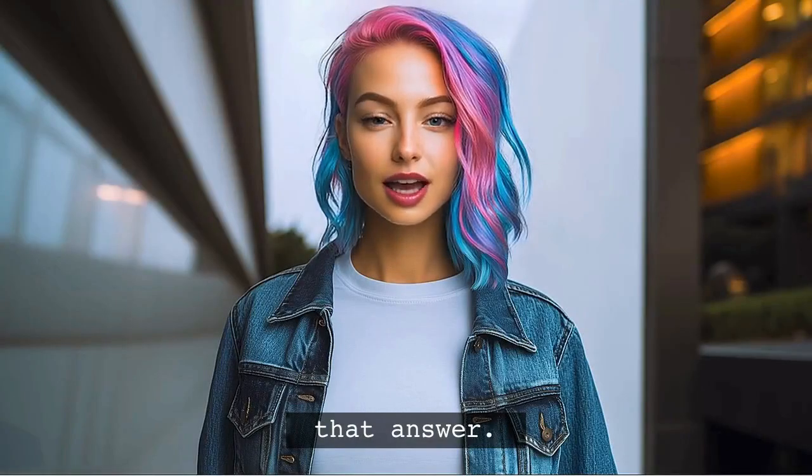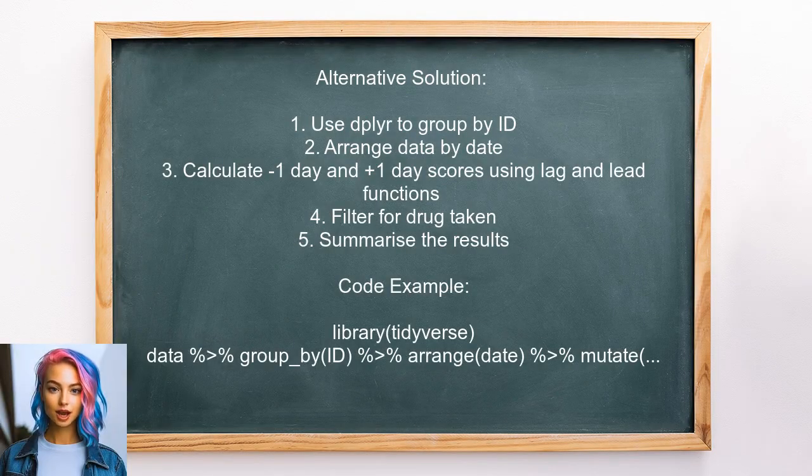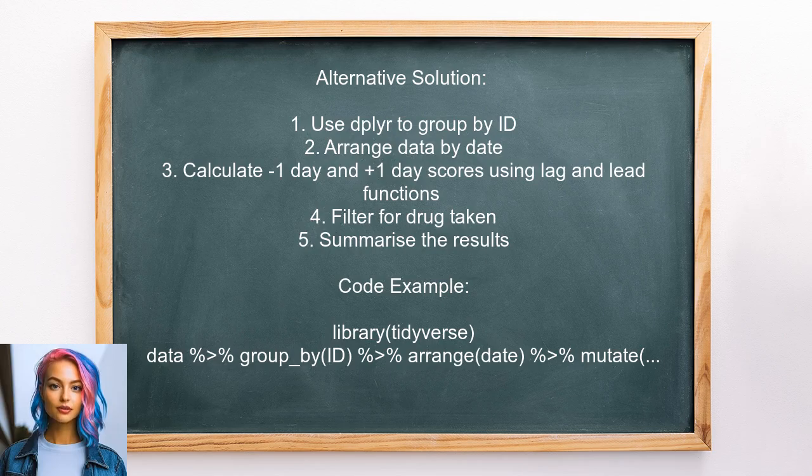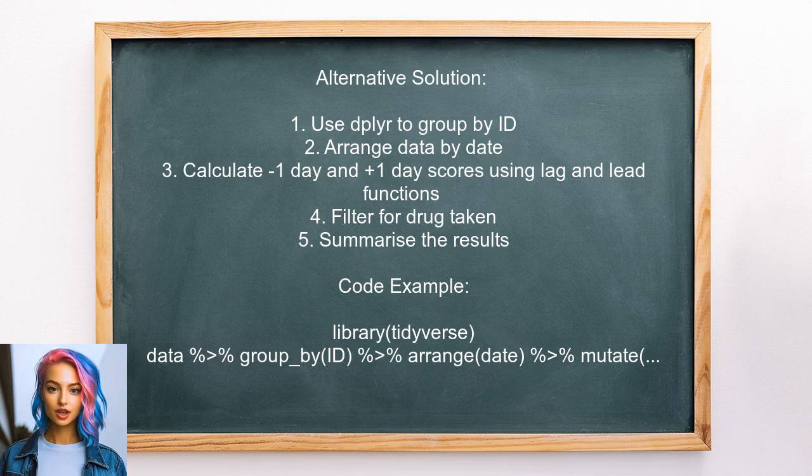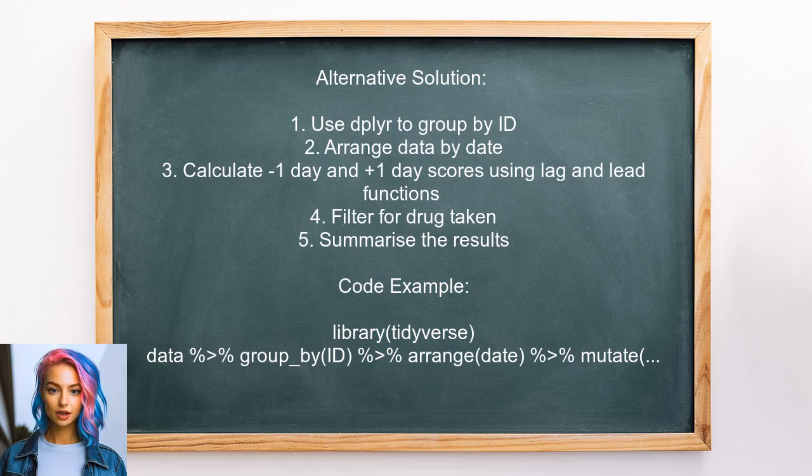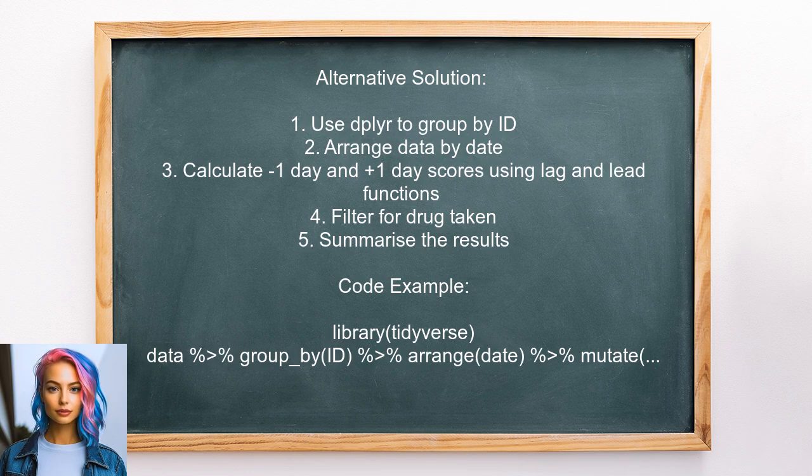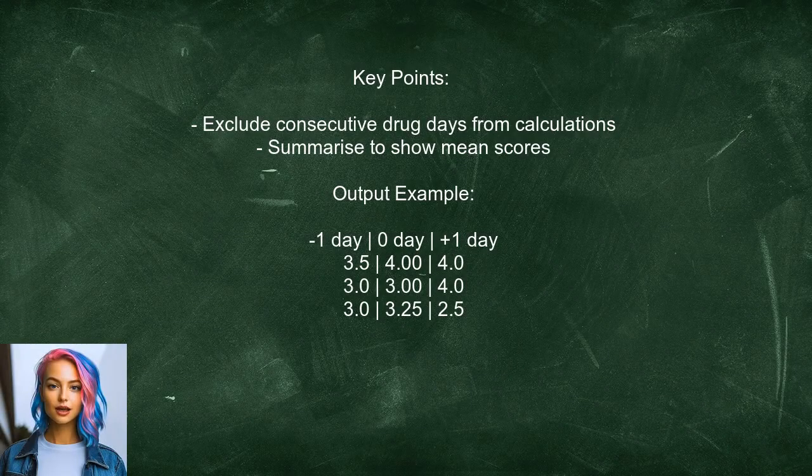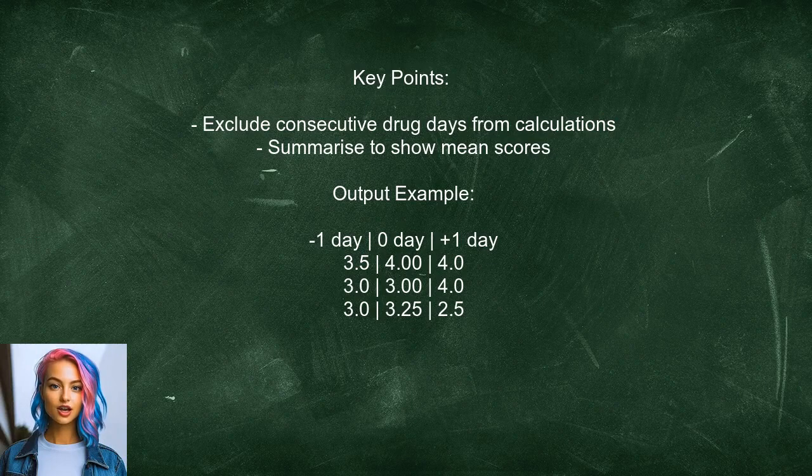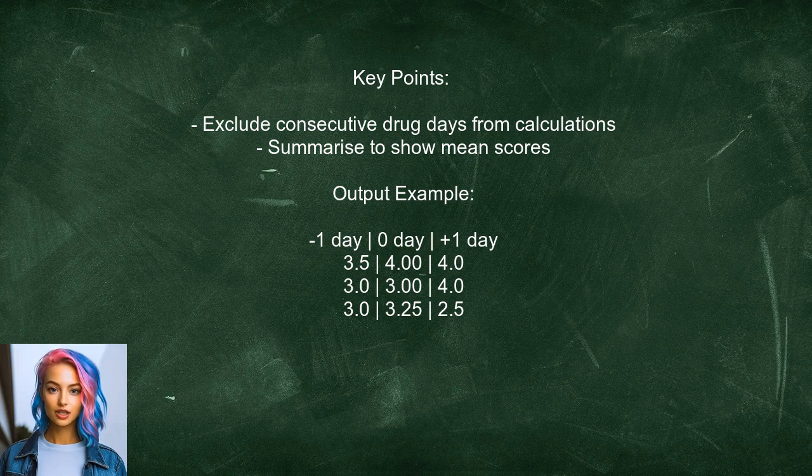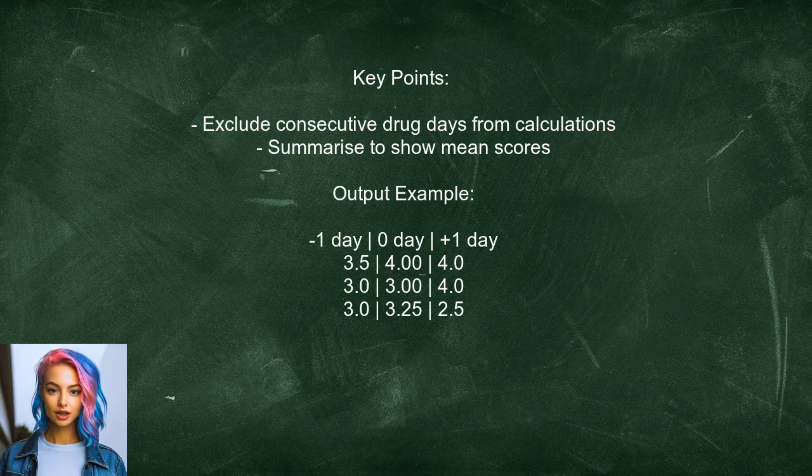That's it for that answer. Let's take a look at another one. An alternative approach provided by a user involves using the dplyr package in R. They suggest grouping the data by ID and arranging it by date. Then they use the lag and lead functions to calculate the scores for the previous and following days, while ensuring that consecutive drug-taking days are handled correctly. The user also emphasizes the importance of excluding scores from consecutive drug-taking days in the calculations. Finally, they summarize the results to display the mean scores for minus one day, zero day, and plus one day.